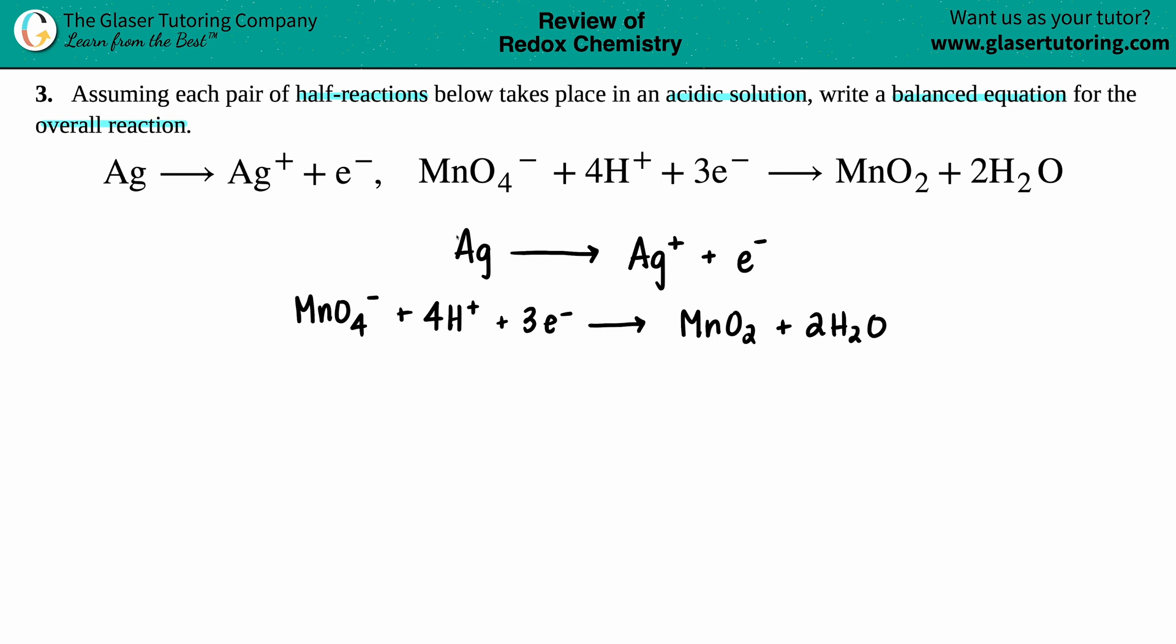Now if I want to make this into one equation, meaning I want to just add them together, the thing is that we never see electrons in equations—they're always canceled out. If we want to cancel them out, they have to be the same number. I do see that there's one electron here and three electrons here. I have to use multiplication to get them to be the same number.